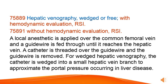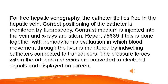For wedged hepatic venography, the catheter is wedged into a small hepatic vein branch to approximate the portal pressure occurring in liver disease. For free hepatic venography, the catheter tip lies free in the hepatic vein. Correct positioning of the catheter is monitored by fluoroscopy.